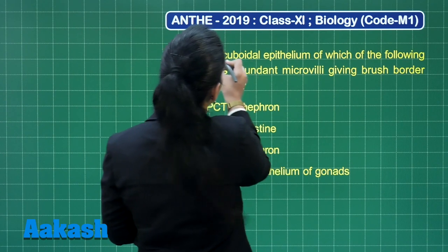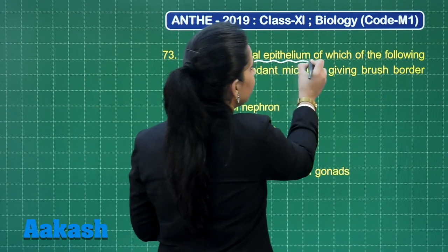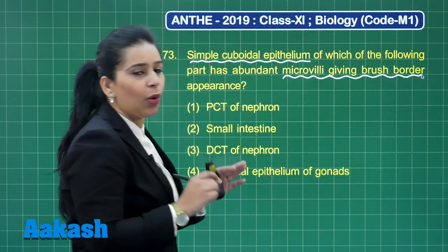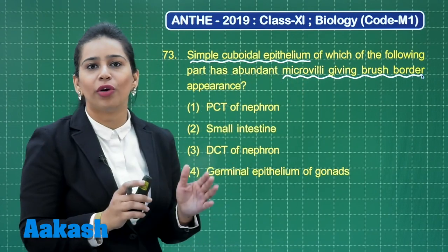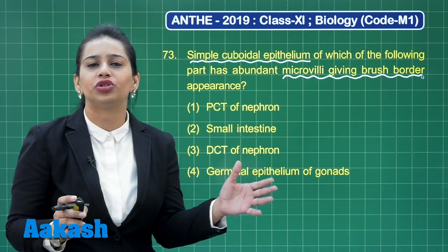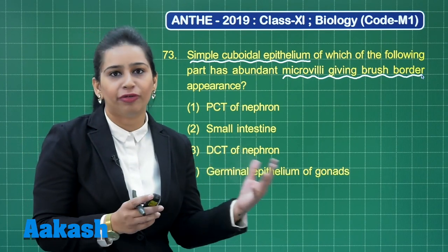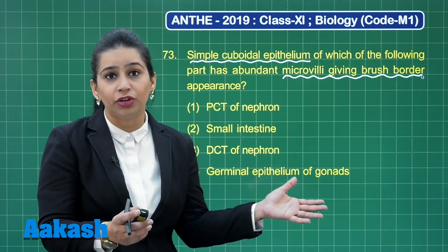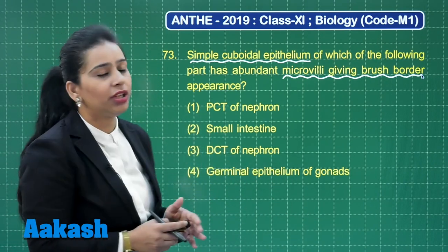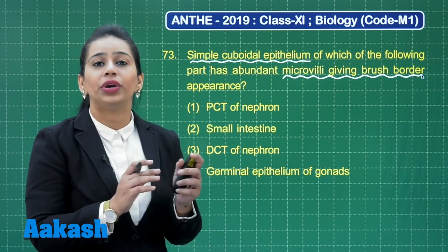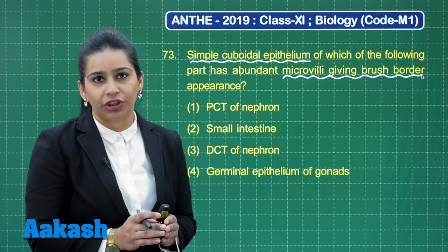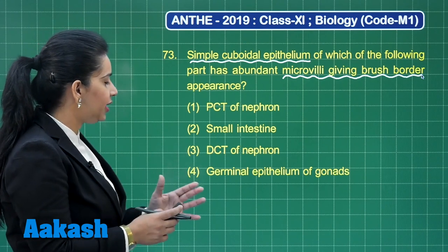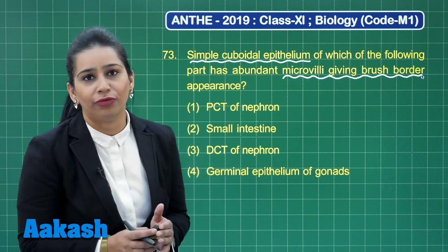This question asks about simple cuboidal epithelium and microvilli giving a brush border appearance. As we know, the cell membrane of epithelial tissue can show modifications at various sites — they may have microvilli, stereocilia, or kinocilia to perform various functions. Microvilli are concerned with increasing the surface area for absorption. The options given are PCT of nephron, small intestine, DCT of nephron, and germinal epithelium of gonads.